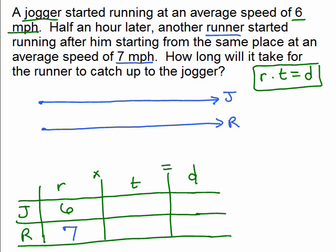Now, what about the time? This is the trickiest for most people. The jogger ran for a half an hour longer because the jogger left first. So however long the runner ran for, the jogger had an extra half an hour. So the runner has a shorter amount of time running than the jogger. So let's let the runner be X and the jogger got a half an hour more. Now, be careful here.